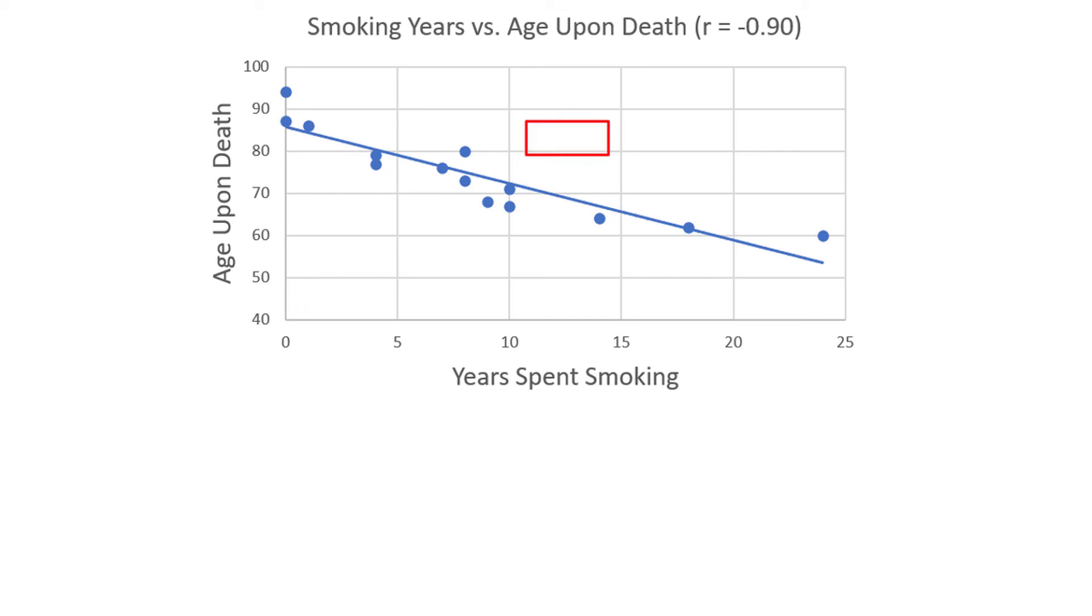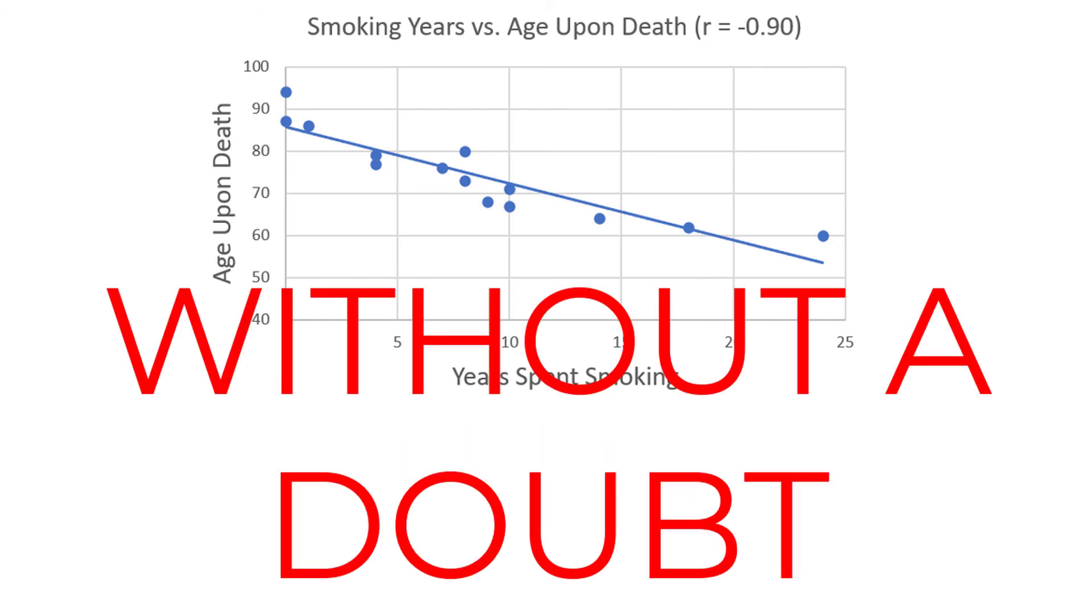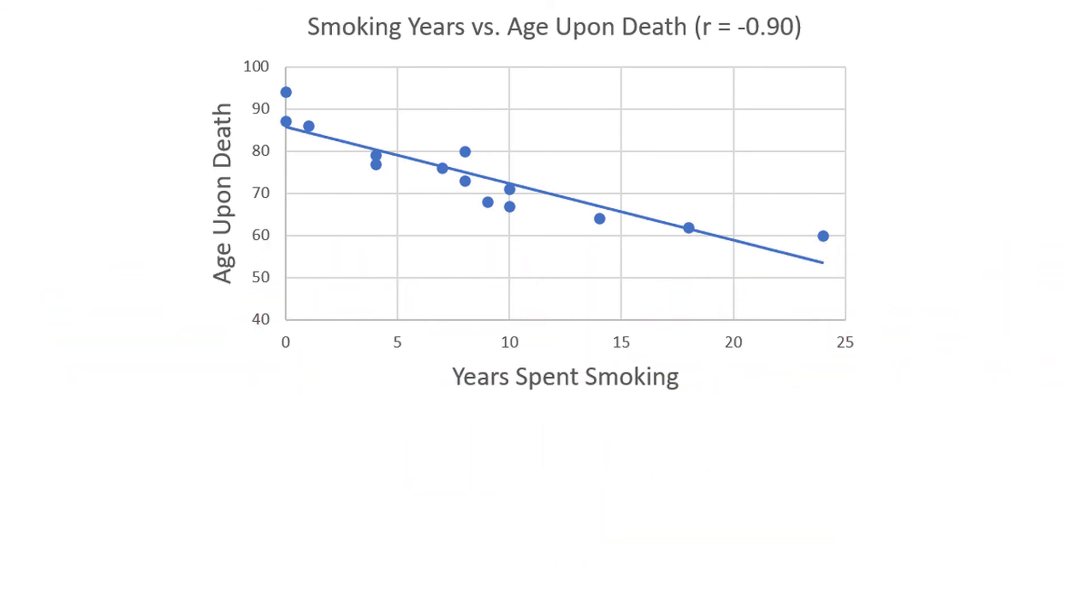The correlation coefficient is negative 0.9, indicating a strong negative correlation. You may be tempted to conclude, based on this scatter plot, that smoking causes life expectancy to decrease. And that conclusion would be absolutely, completely, 100%, without a doubt, the wrong conclusion to draw based on this plot.